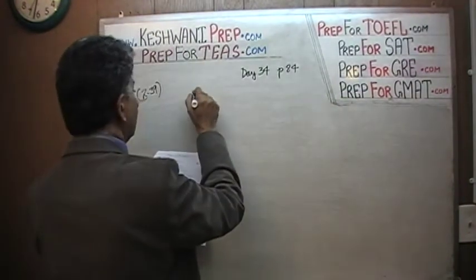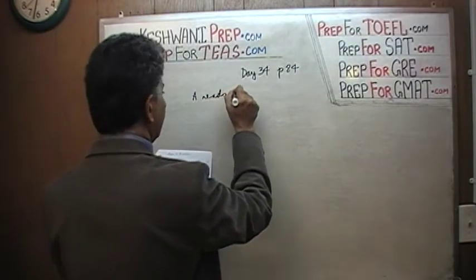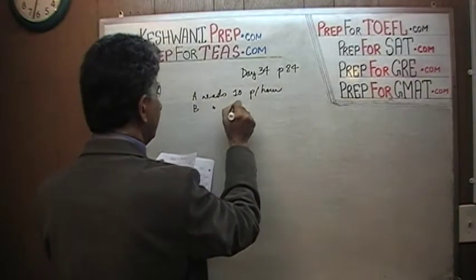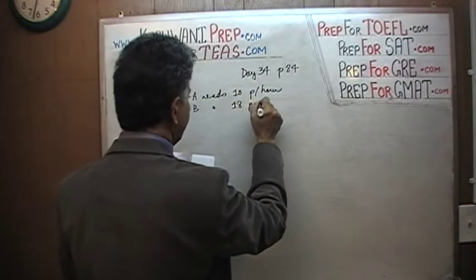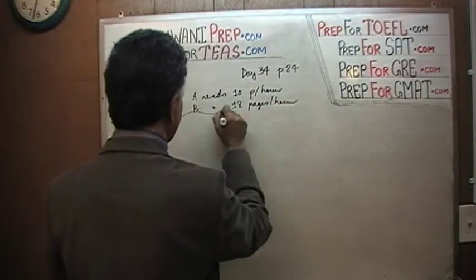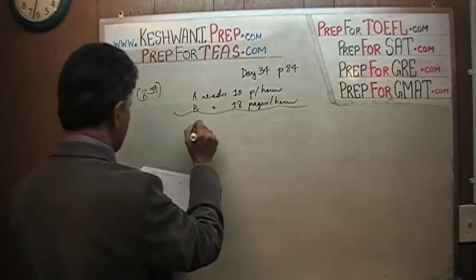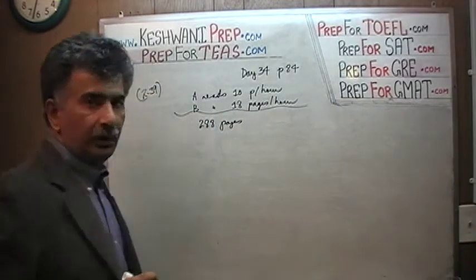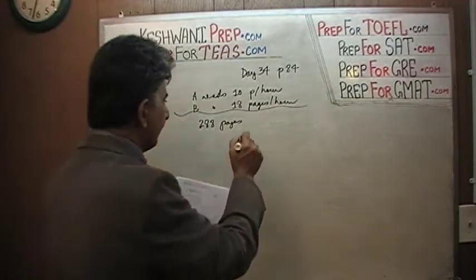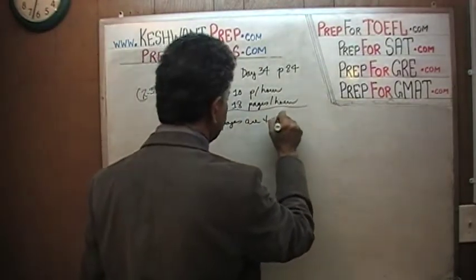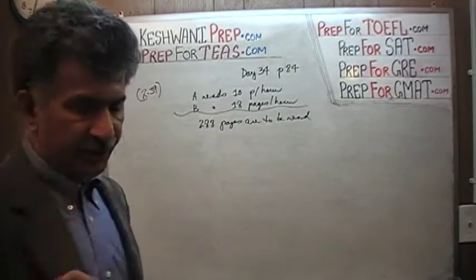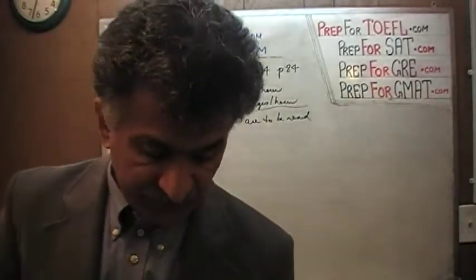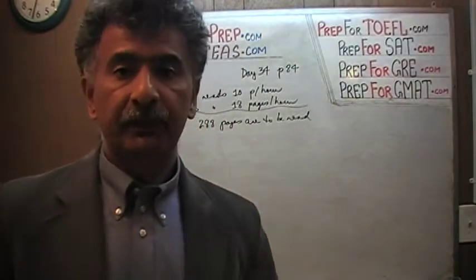We're told that A reads 10 pages per hour. We're also told that B reads 18 pages per hour. We are told that a total of 288 pages are to be read — by each, that is. And the question simply is: how much is going to be the difference in the amount of time that the two people are going to take? Well, let's find out.